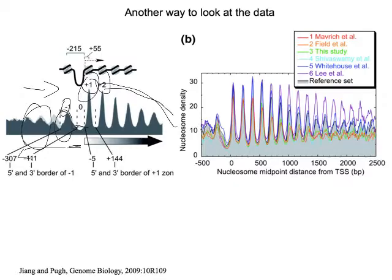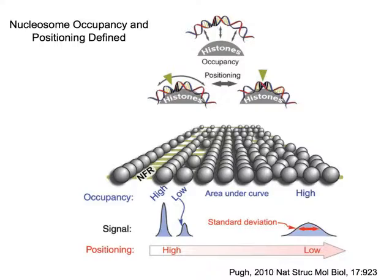This sort of plot is something you should be able to interpret, and here's just another version of that — again, where zero is the transcription start site of every gene — and you see the same sort of features that we saw in a variety of studies.